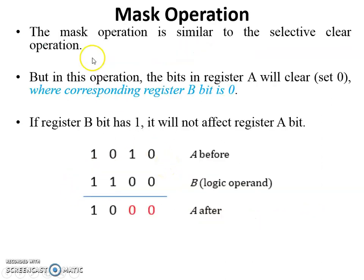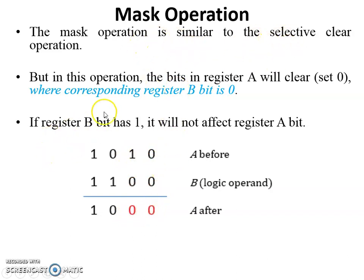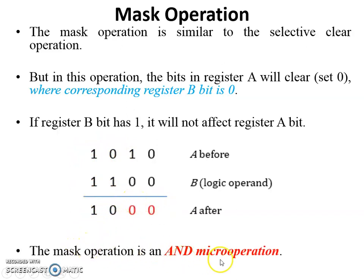The last one is mask operation. The mask operation is similar to the selective clear operation, but the difference is: in mask operation, the bits in register A will be cleared where the corresponding register B bit is zero. In selective clear, A bits are cleared when B bit is 1; in mask operation, A bits are cleared when B bit is 0. If register B bit is 1, it does not affect register A — so those bits remain as-is. The mask operation is an AND micro operation.